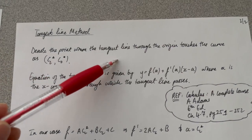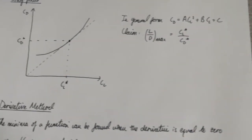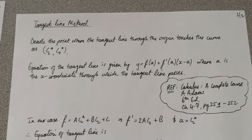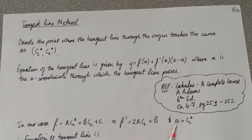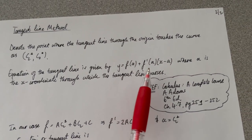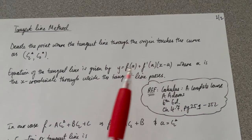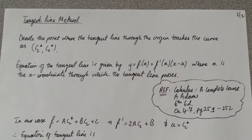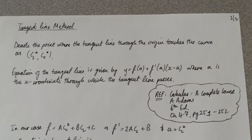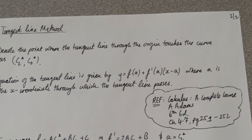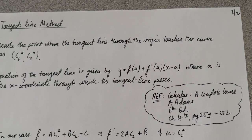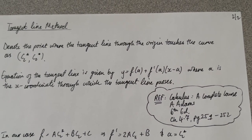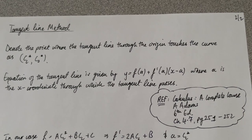I'm denoting the point where the tangent line through the origin first touches the curve as (CL*, CD*). The equation of a tangent line is given by f(a) + f'(a) × (x − a), where a is the x-coordinate through which the tangent passes. This can be found in any decent calculus textbook — I'm using Calculus: A Complete Course by Adams, sixth edition.